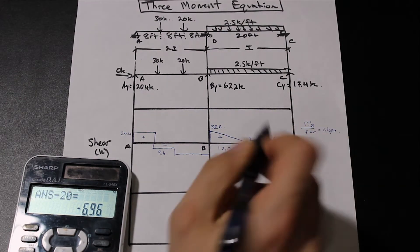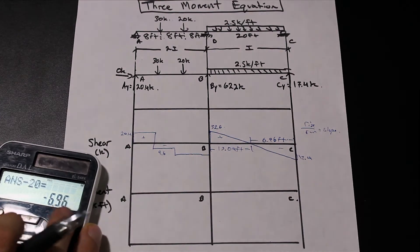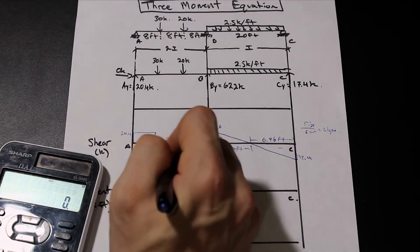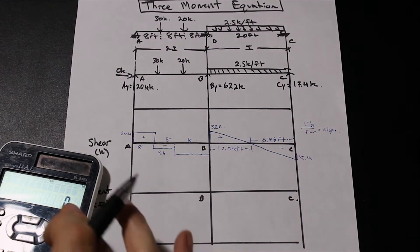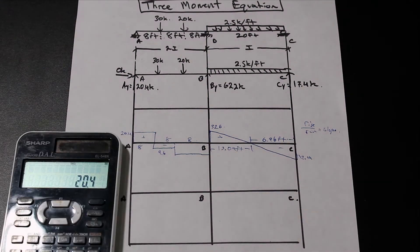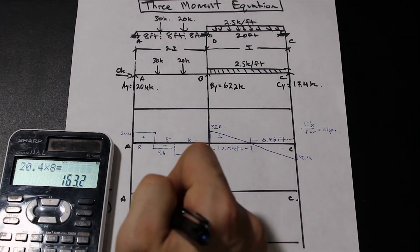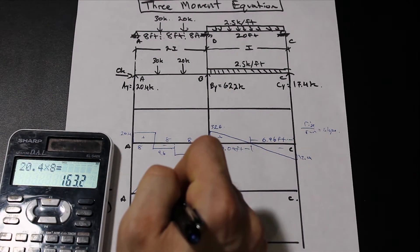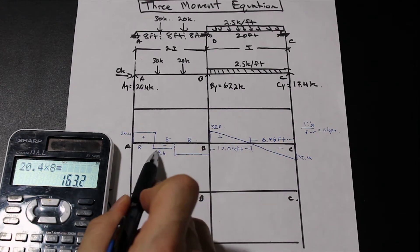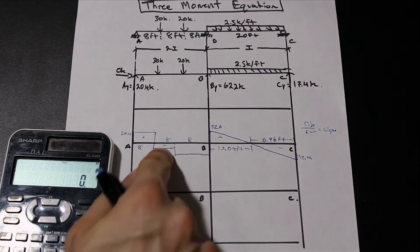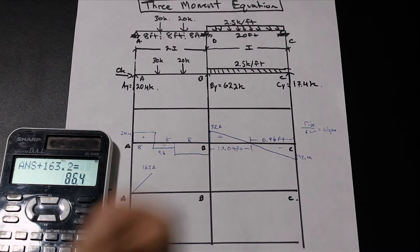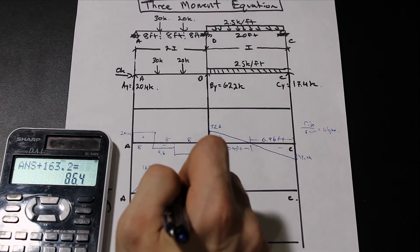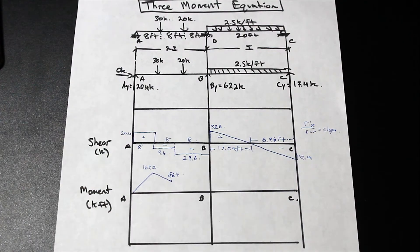Very good. Let's go ahead and draw the moment diagram using the areas. So we know that these are 8. I like to label this here, and that makes it a little easier so that we could just look at this, find the areas, and translate them directly. So we have 20.4 times 8, that's going to give us 163.2. And then we have a negative moment here, so that's going to be subtracting from our positive moment there. It's going to give us 86.4. So we have 86.4.